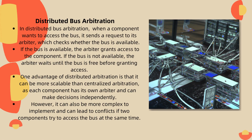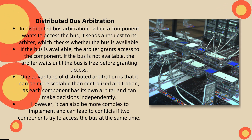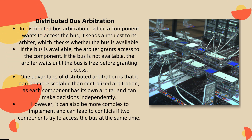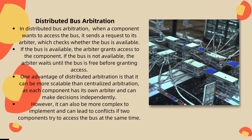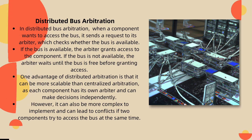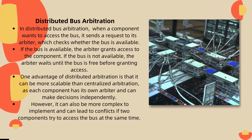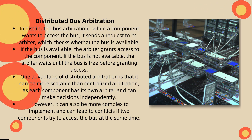Distributed bus arbitration: when a component wants to access the bus, it sends a request to the arbiter, which checks whether the bus is available or not. If the bus is available, the arbiter grants access to the component. If the bus is not available, the arbiter waits until the bus is free before granting access. One advantage of distributed arbitration is that it is more scalable than centralized arbitration, as each component has its own arbiter and can make decisions independently. However, it can also be more complex to implement and can lead to conflicts if components try to access the bus at the same time.